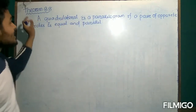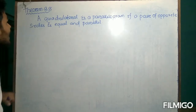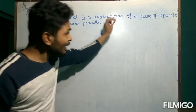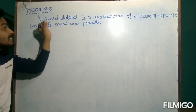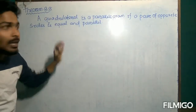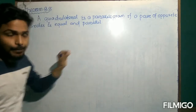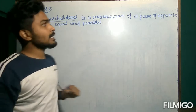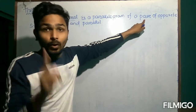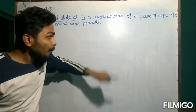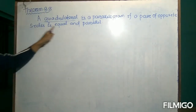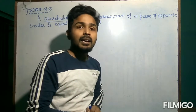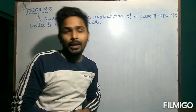According to theorem 8.8, it is stated that a quadrilateral is a parallelogram if a pair of opposite sides is equal and parallel. It means if there is a quadrilateral and in this quadrilateral one pair of opposite sides are equal and parallel, then that quadrilateral is termed to be a parallelogram.